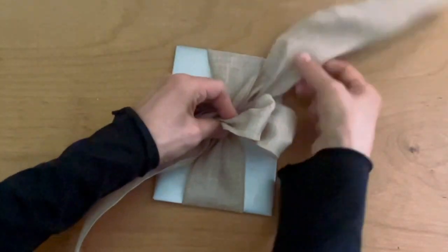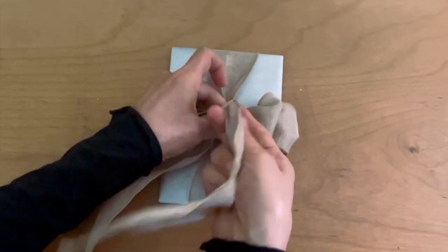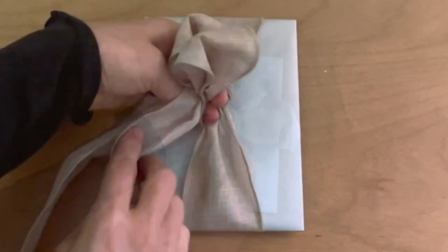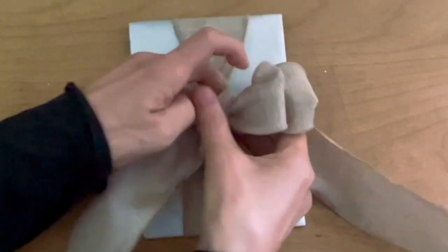Wrap the short end ribbon around the loops while tiling the ribbon. Push it through this hole and pull it out to the left.